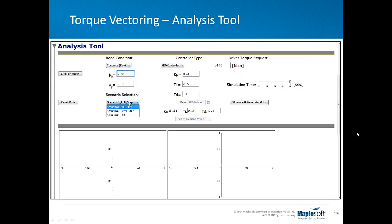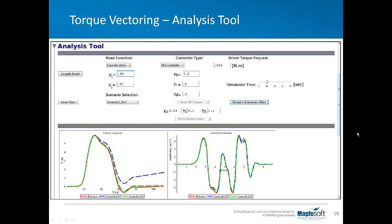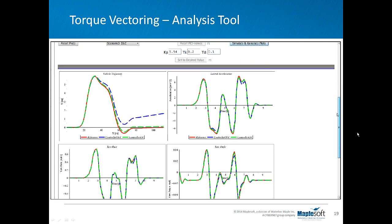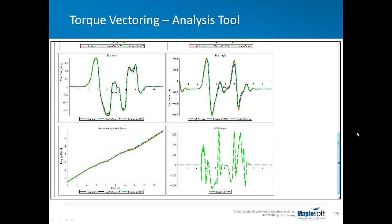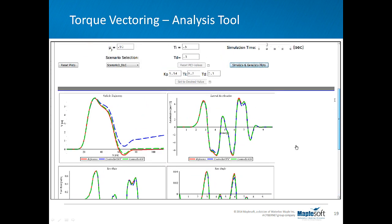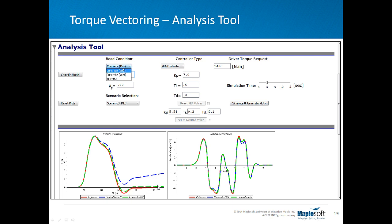Now we are demonstrating two different stability scenarios. First we select the standard double lane change scenario and run the model with high friction coefficients between tires and ground contact. As you can see, the vehicle with controller on follows the reference path, and the other one deviates.